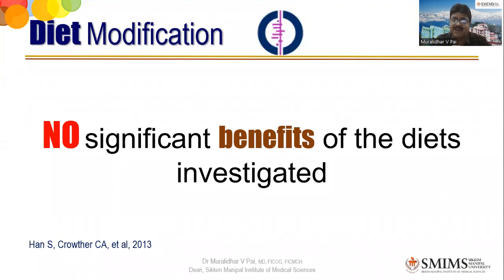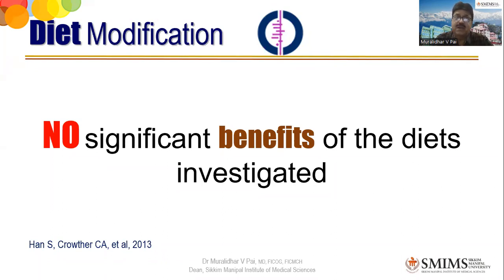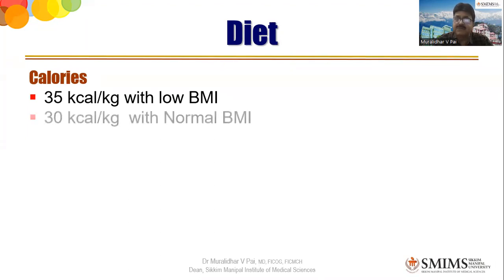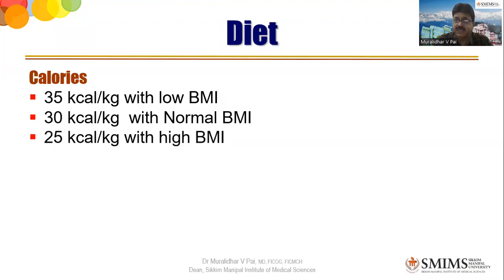We have to always walk a tight rope — we cannot err on the side of the mother nor on the side of the baby. We have to make that balance. If you deliver too early there will be a preterm baby; if you deliver too late there will be a problem for both. Even in life, one who knows what is optimum is the winner. So we can ask her to have things in moderation — calorie-wise, 35 kcal per kg if the lady has low BMI, decreasing to 30 and then 25 as BMI increases.